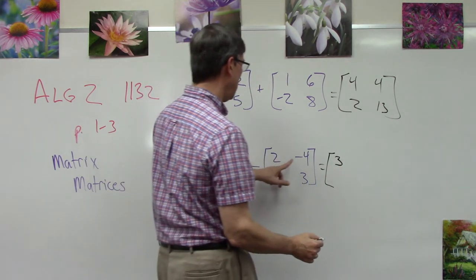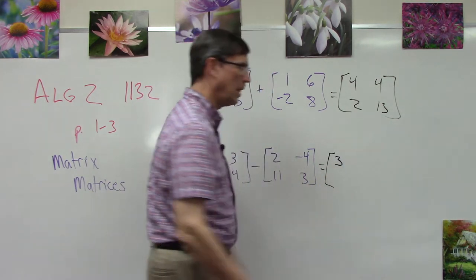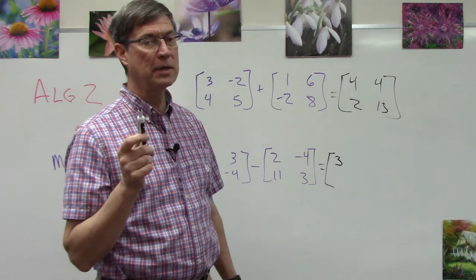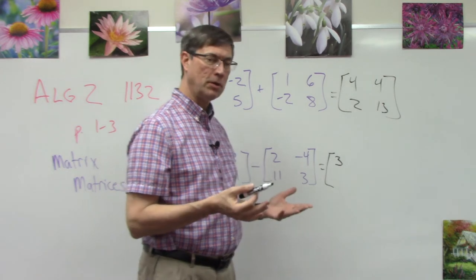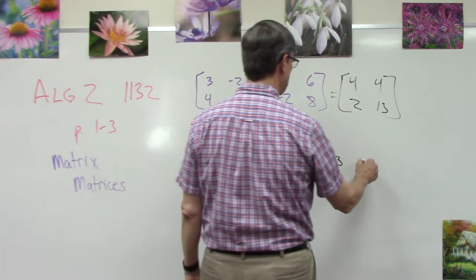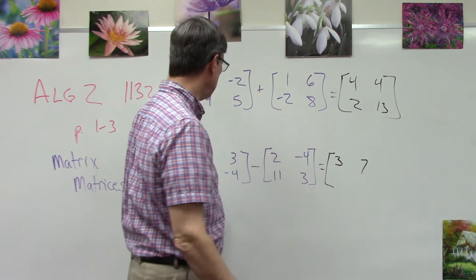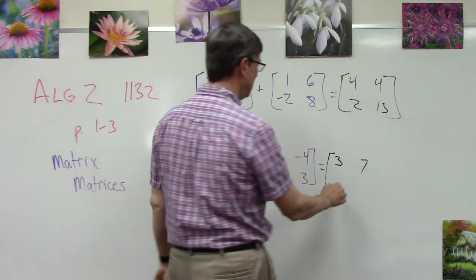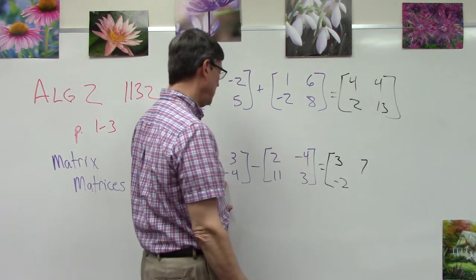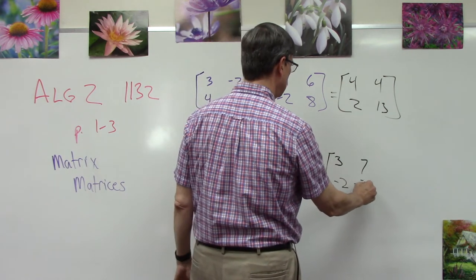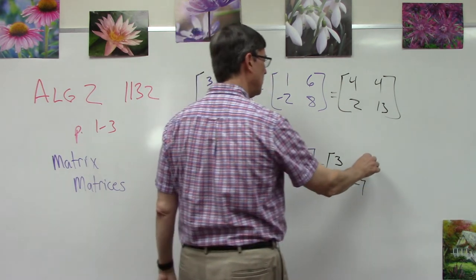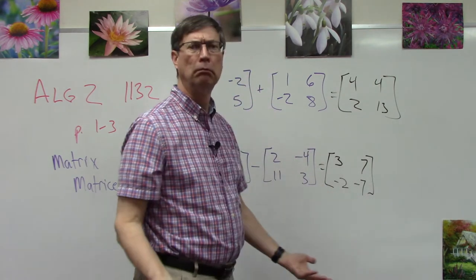Three minus negative four. Now, that's what we're going to be careful. Remember the rules for subtracting, and we have a negative, it becomes addition, correct? So that would be seven. Nine minus 11 is negative two. Negative four minus three is negative seven.